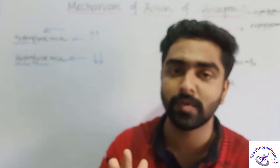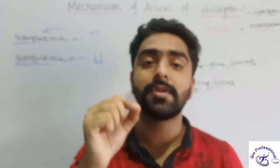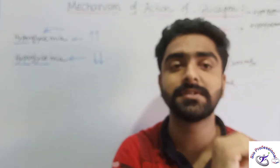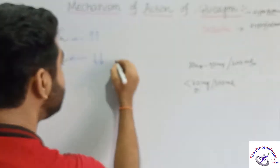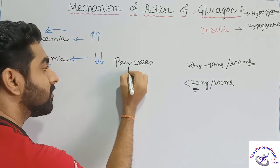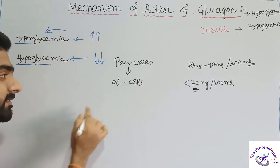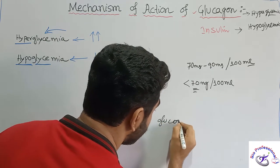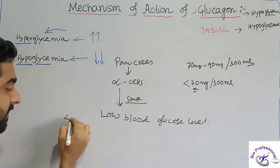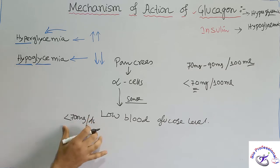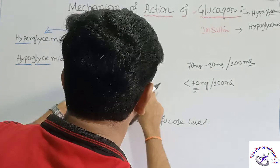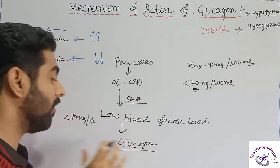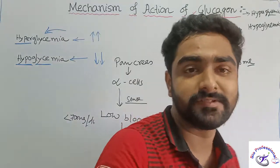How is glucagon released? When the blood sugar level is low, who recognizes this? This is done by the pancreas. The pancreas has got alpha cells. These alpha cells sense the low blood glucose level. When it is less than 70 mg per deciliter (per 100 ml), the alpha cells sense this and release glucagon, which is a hormone.